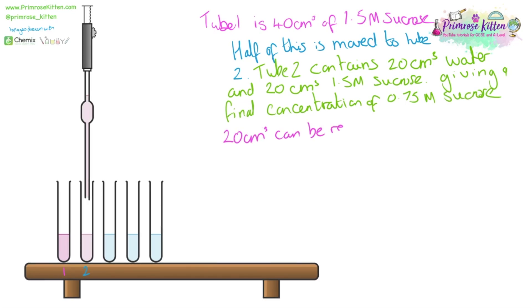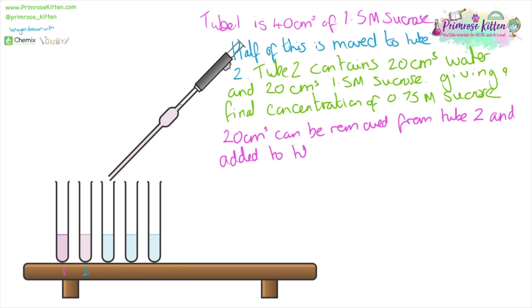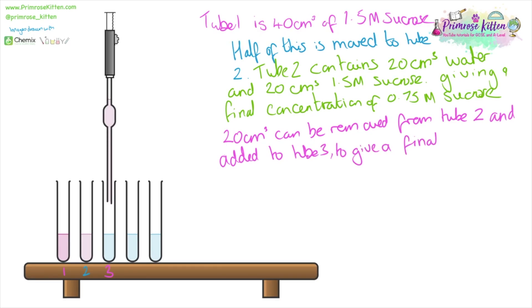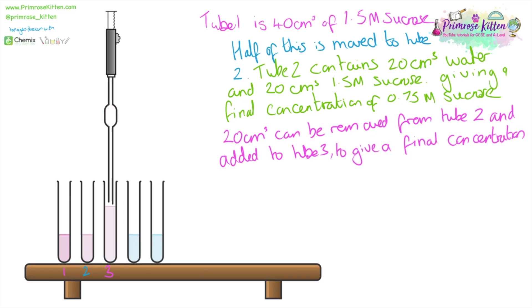A little bit of mixing, 20 cm³ can be removed from tube number two. This can be added to tube three. To give a final concentration in tube three, 0.375 molar sucrase. Added from 20 cm³ of water and 20 cm³ of 0.75 molar sucrase.